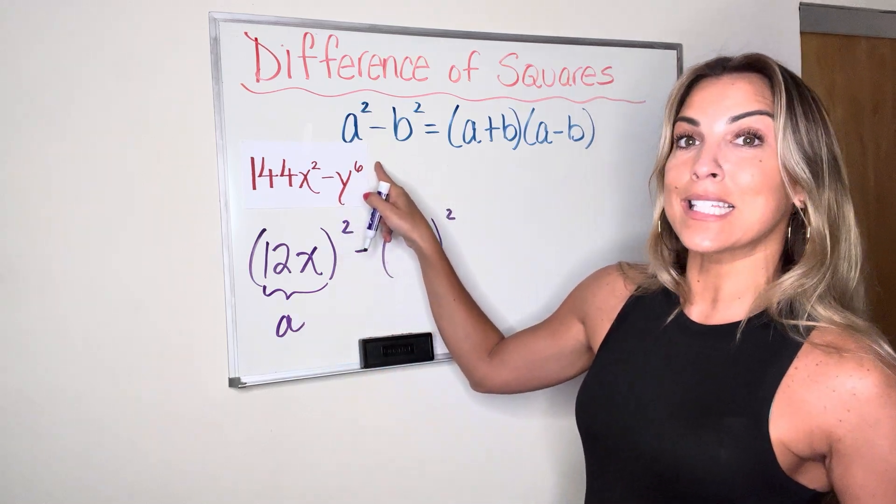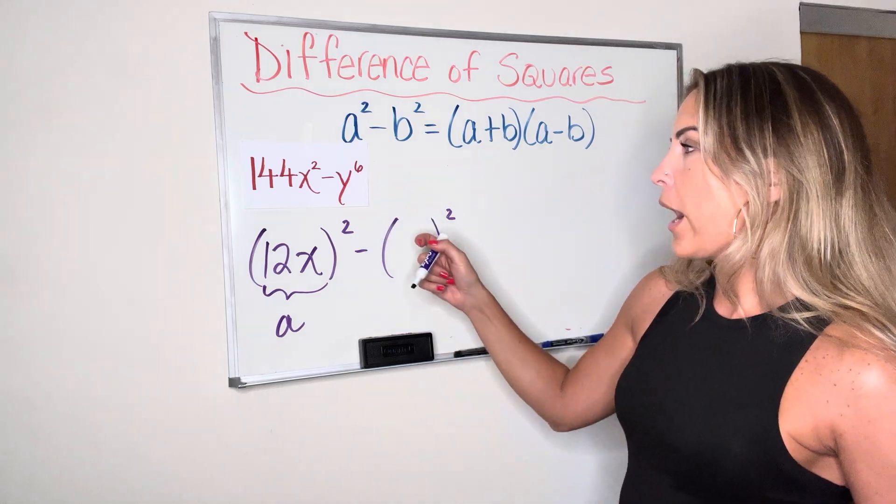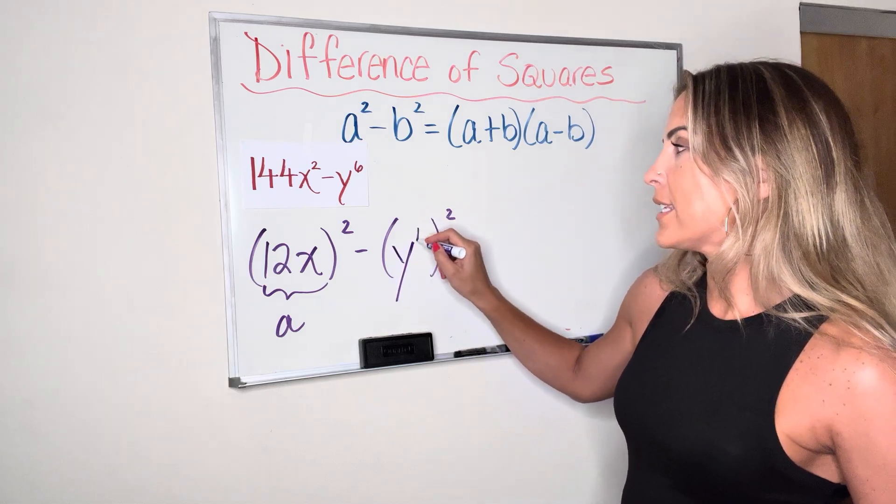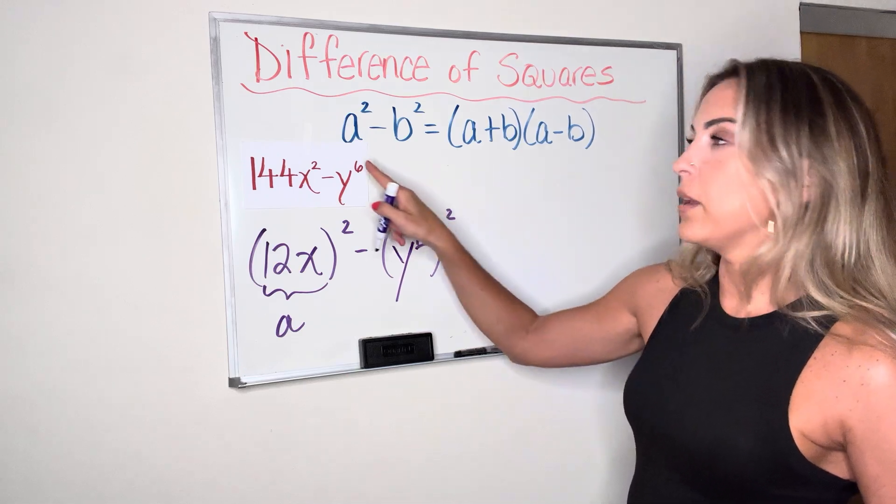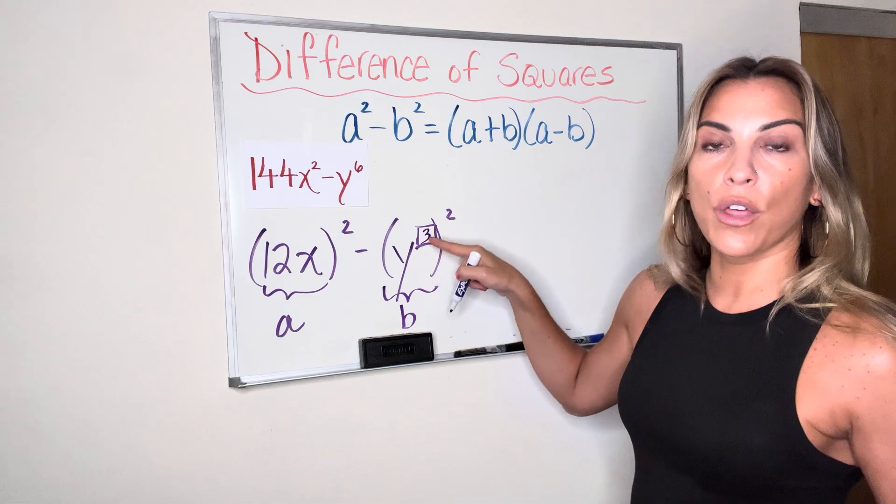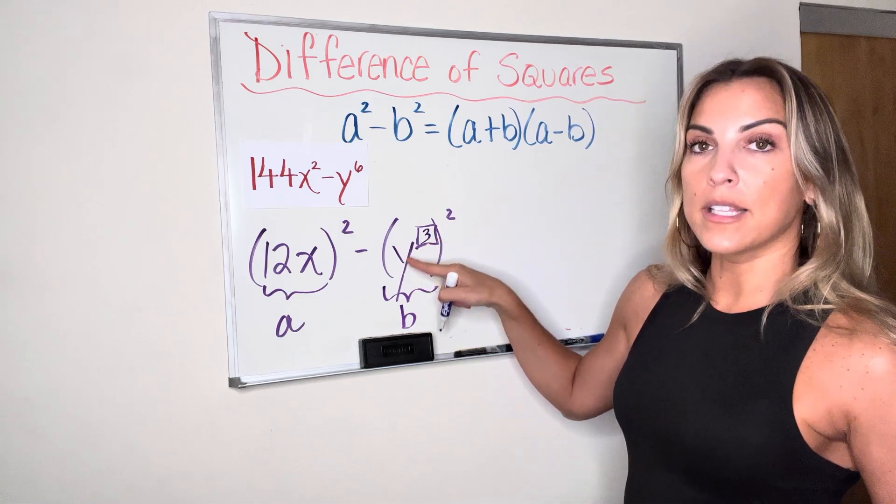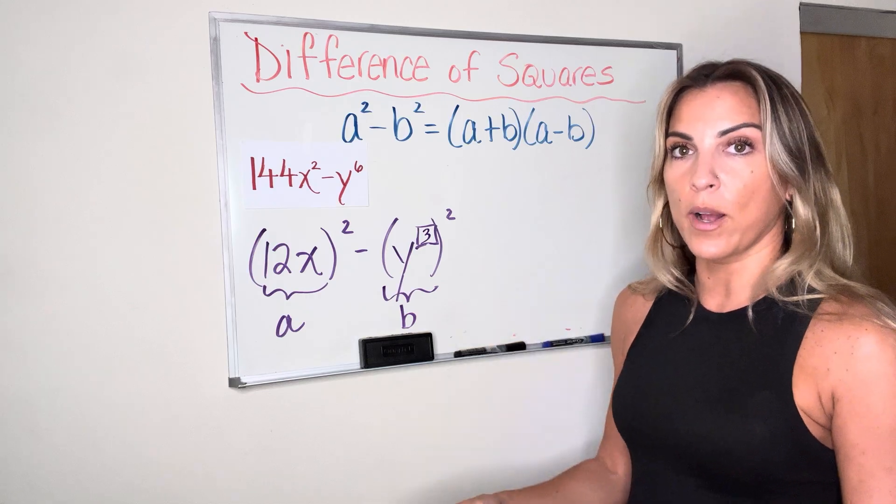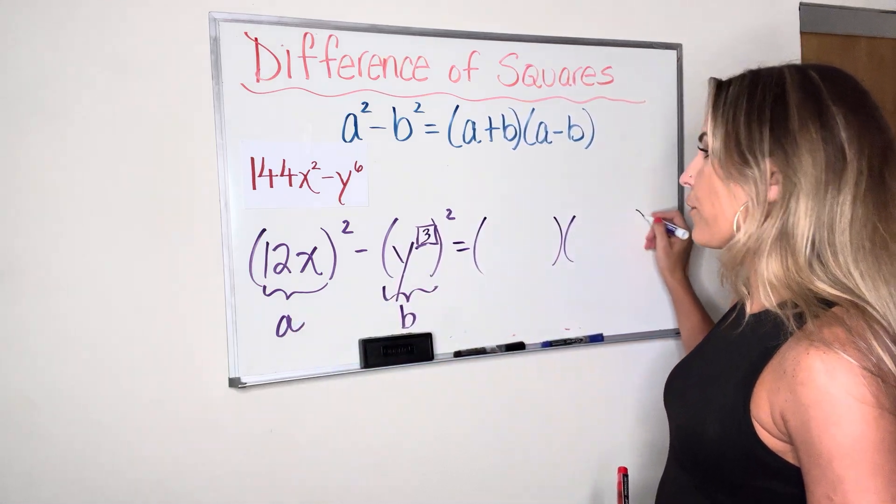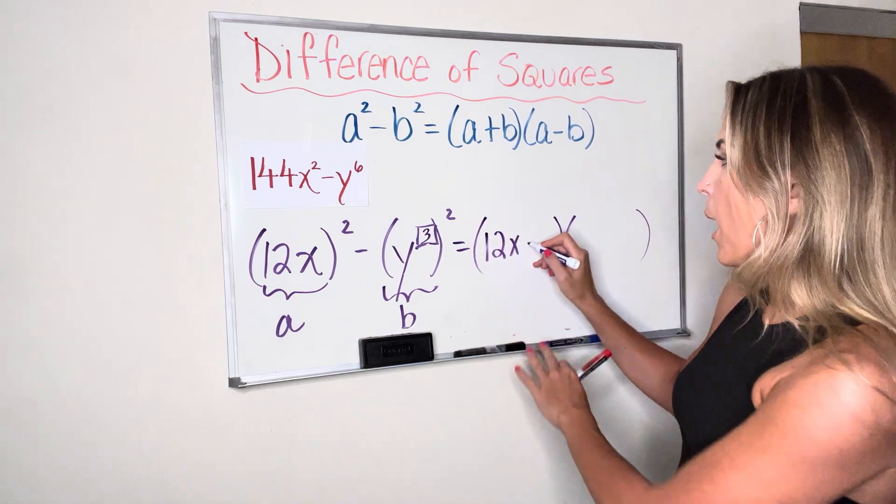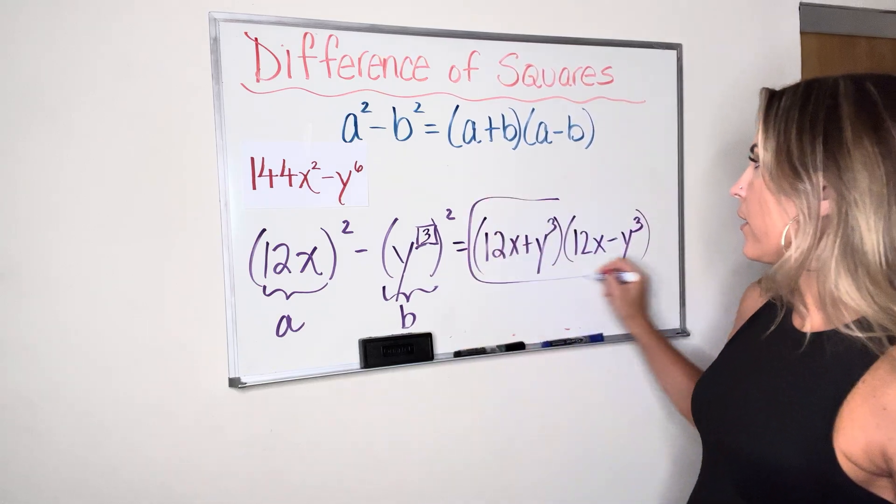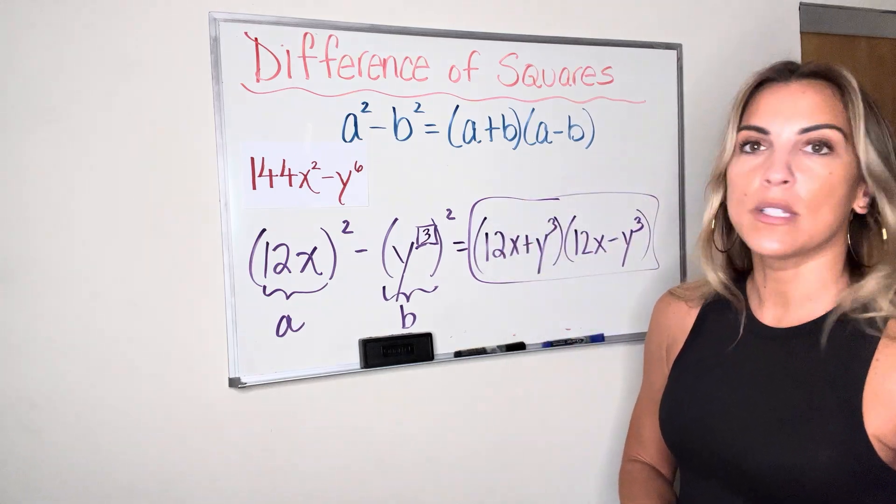What squared would give me y to the sixth power? Well, I have to remember that when I'm raising a power to another power, I'm multiplying those exponents. So when I'm trying to think about what goes in here, it's going to be y to the something, right? Well, what times 2 is going to give me the exponent of 6 that I need? The answer here is 3. So that means that my B term is y to the third power. If I square y to the third power, I'll get y to the sixth power. y to the third times y to the third is y to the sixth. So now I've identified my A. I've identified my B. Now we're just substituting into the formula. So A plus B, 12x plus y cubed times A minus B, 12x minus y cubed. So here is my factored version of the red problem after using the difference of squares formula.